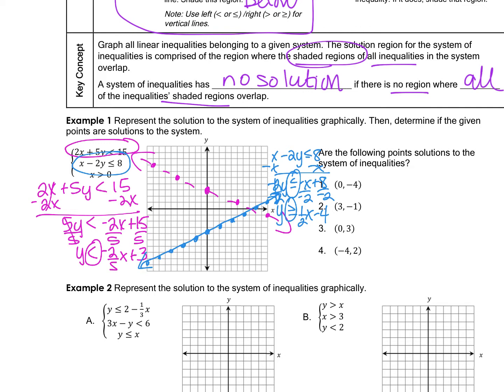I forgot to shade the first one, so going back: y is less than means shading below the pink line — pick a point and draw an arrow below it. For the blue inequality, y is greater than means shading above — pick a point and draw an arrow above. I like to draw arrows first and only shade the final solution region at the end.